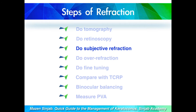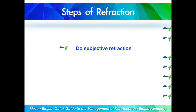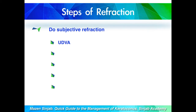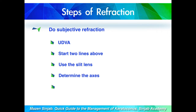Subjective refraction. The steps of the subjective refraction are: measuring uncorrected visual acuity, starting two lines above the uncorrected visual acuity, using the slit lens, determining the axis, and finally determining the power.